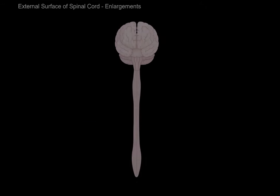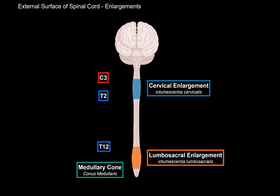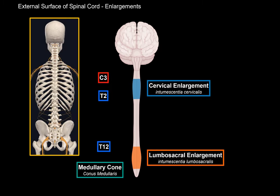Looking at the spinal cord anteriorly, you'll notice two distinct enlargements. One is the cervical enlargement, going from segment C3 to T2, and the other is the lumbosacral enlargement, going from T12 down to the medullary cone. These are significant because at these regions you have bundles of nerves called plexuses supplying the upper and lower limbs. The cervical enlargement forms the brachial plexus for the arms, and the lumbosacral enlargement is for the sacral and lumbar plexuses, innervating structures in the pelvis and legs.